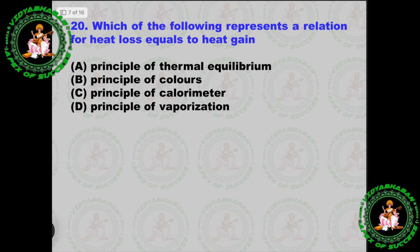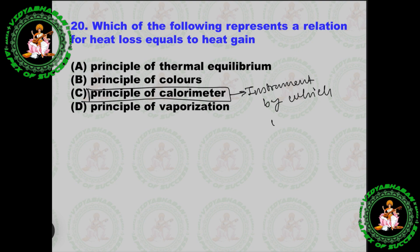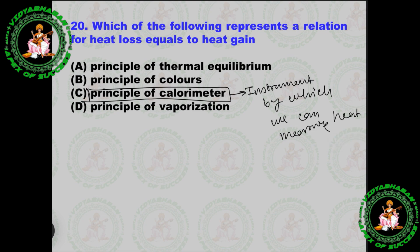Next question: Which one of the following represents the relation for heat loss equals heat gain? This is the calorimeter principle, which is very important. A calorimeter is an instrument by which we can measure heat. The principle of calorimetry states that heat loss equals heat gain. Temperature is measured by a thermometer, and heat is measured by a calorimeter.